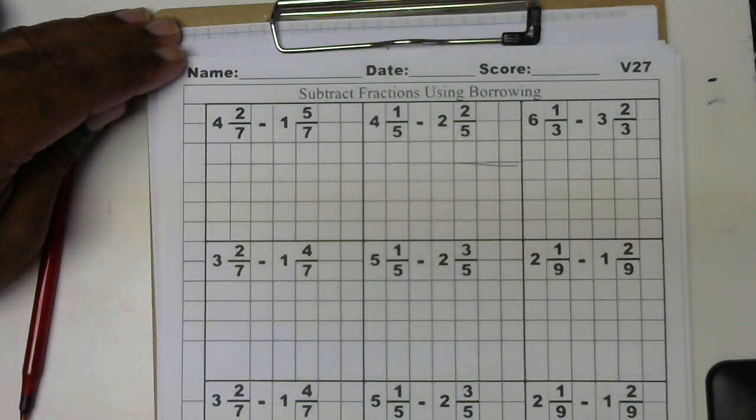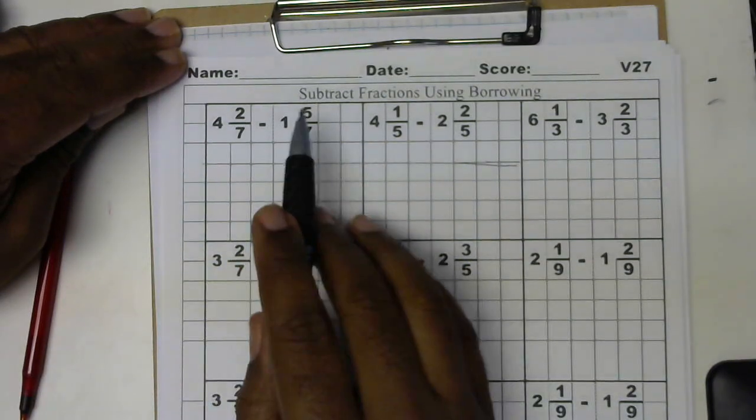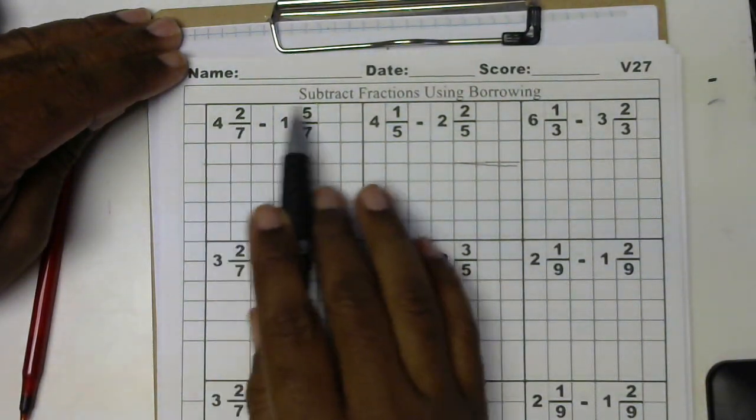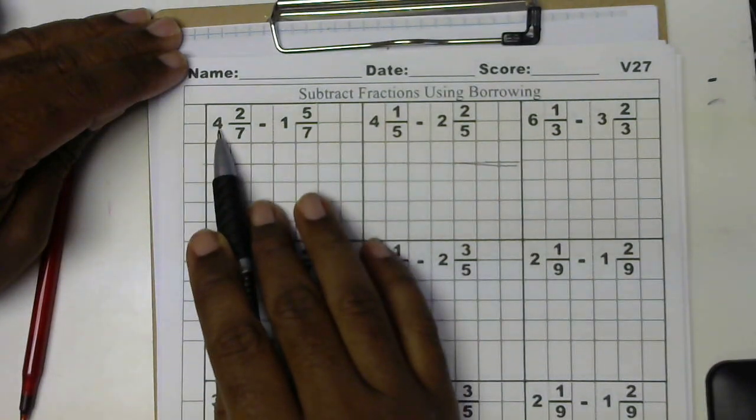On B27 we'll be subtracting fractions using borrowing. First I noticed that I cannot subtract 5 from 2, so I have to borrow from the 4.